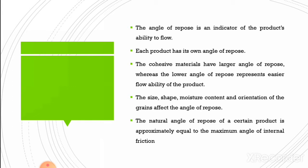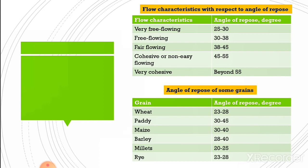The natural angle of repose of a certain product is approximately equal to the maximum angle of internal friction. Regarding flow characteristics with respect to angle of repose: very free-flowing materials have an angle of repose in the range of 25 to 30 degrees; free-flowing materials have 30 to 38 degrees; average-flowing materials have 38 to 45 degrees; cohesive or non-easy-flowing materials have values in the range of 45 to 55 degrees; and very cohesive materials have an angle of repose beyond 55 degrees. The next table shows the angle of repose of some common grains.